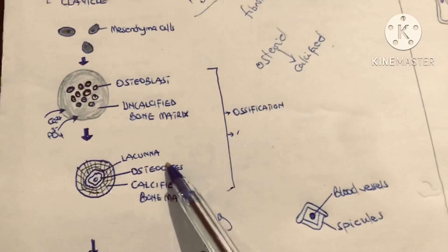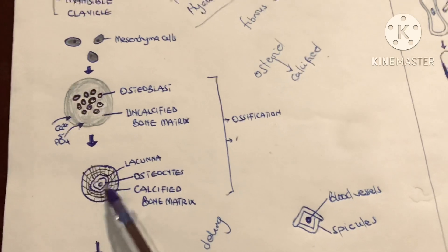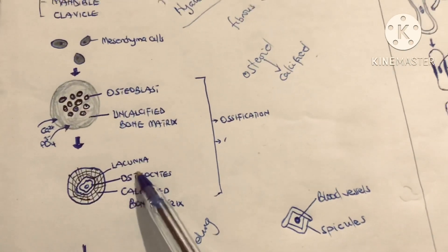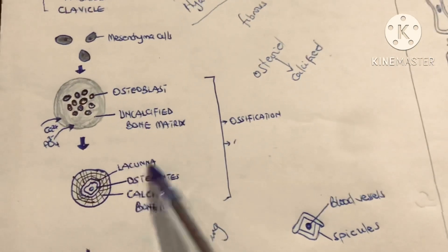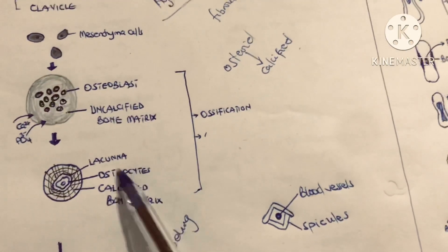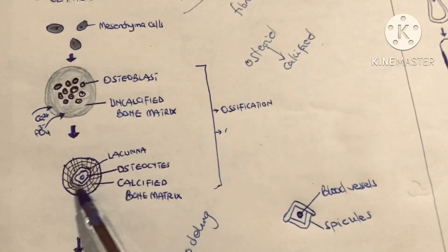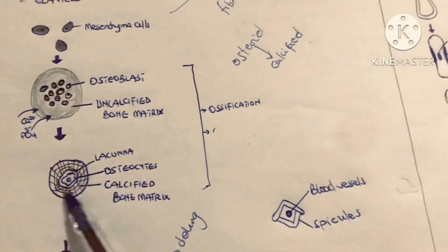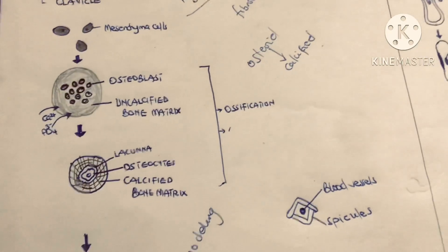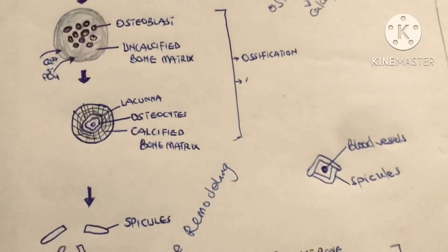The spaces that house these osteocytes are called the lacuna. The function of the osteocytes is to maintain the bone matrix. Through further intramembranous ossification there will be the formation of structures called spicules.